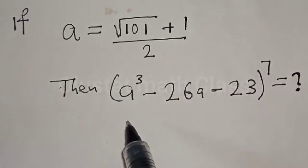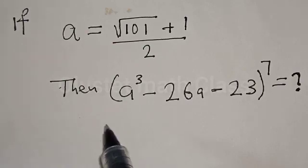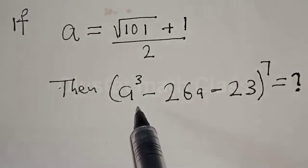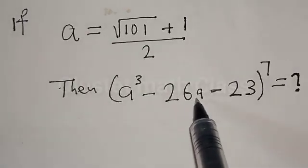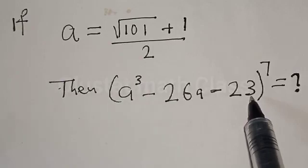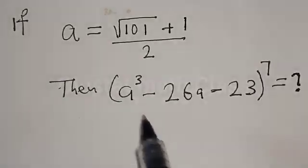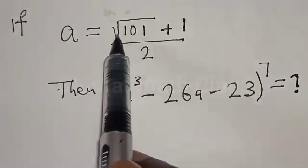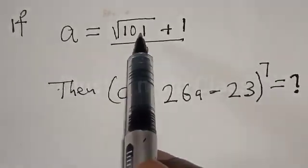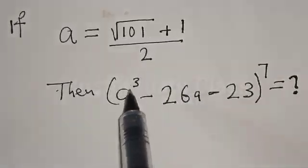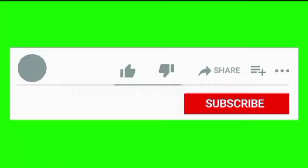Hi everyone, welcome to my class. In this class, we want to find the value of a raised to power 3 minus 26a minus 23, all raised to power 7. So a is given to be square root of 101 plus 1 over 2.